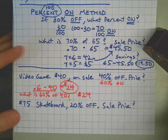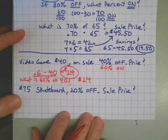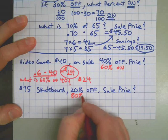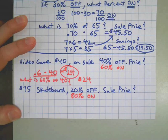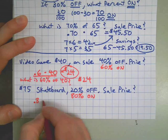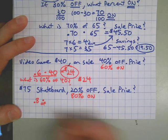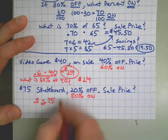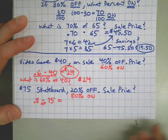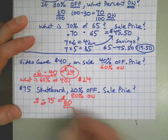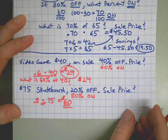Next one: seventy-five dollar skateboard, twenty percent off means eighty percent on - it adds up to a hundred. I can do that in my head. What is eighty percent of seventy-five? Multiplication means 'of' - I want to get that and never forget it. 'Of' is multiplying. Eighty percent of seventy-five equals sixty dollars. That's it.